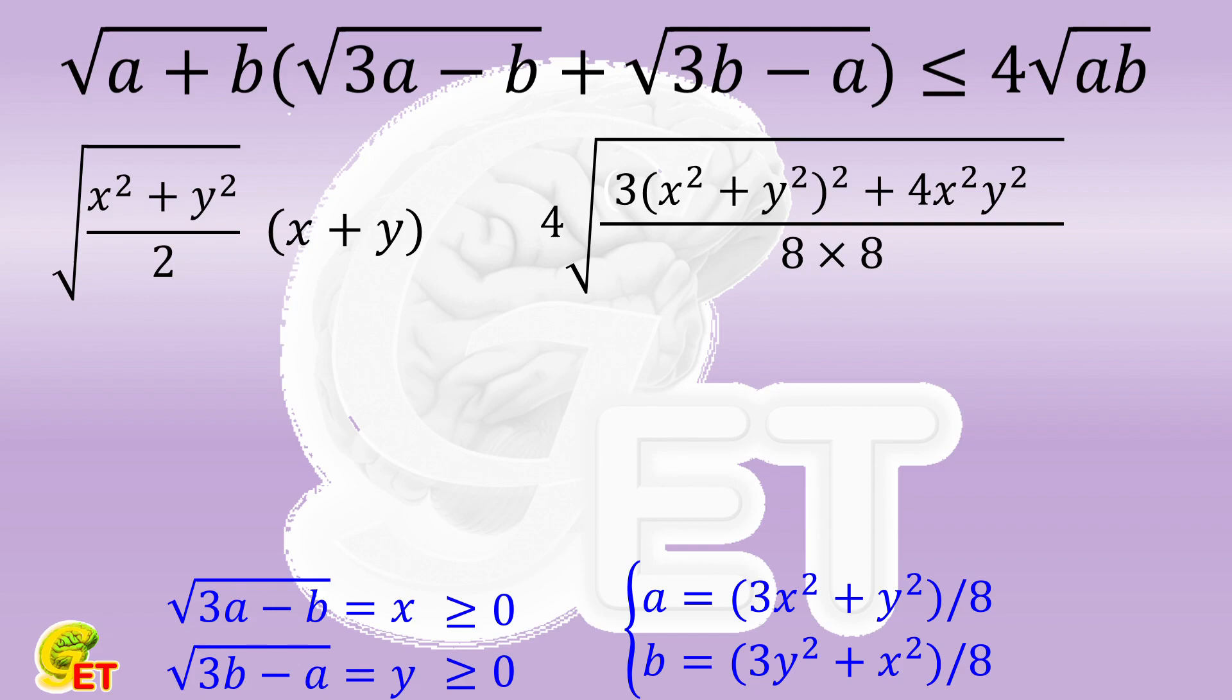Now there are square roots on both sides, so it's not very easy to compare them. But none of them are smaller than 0, so we can simply square both sides.